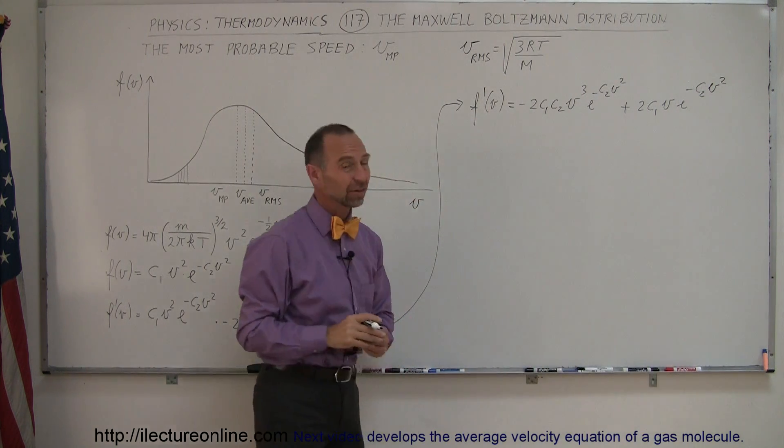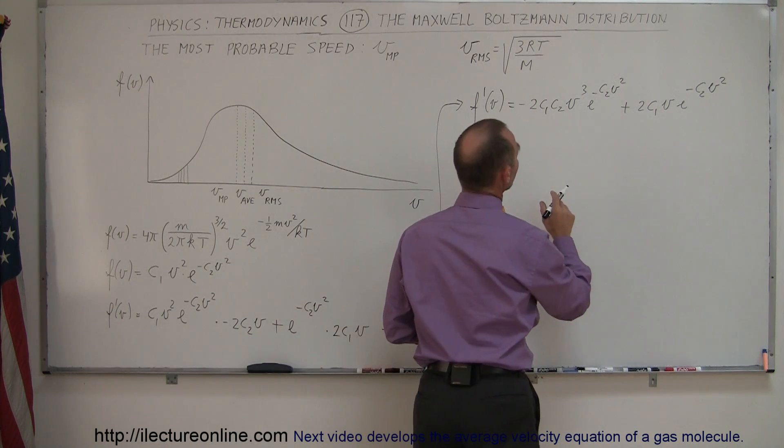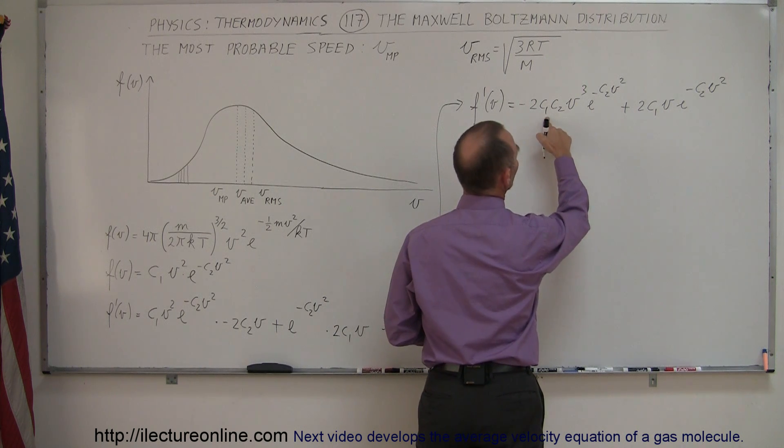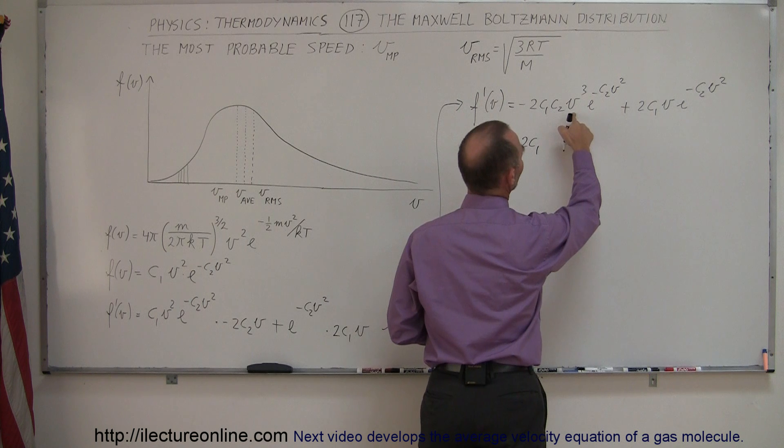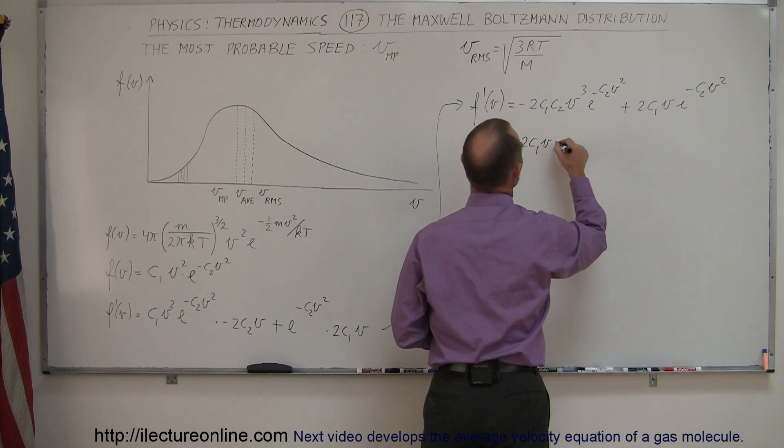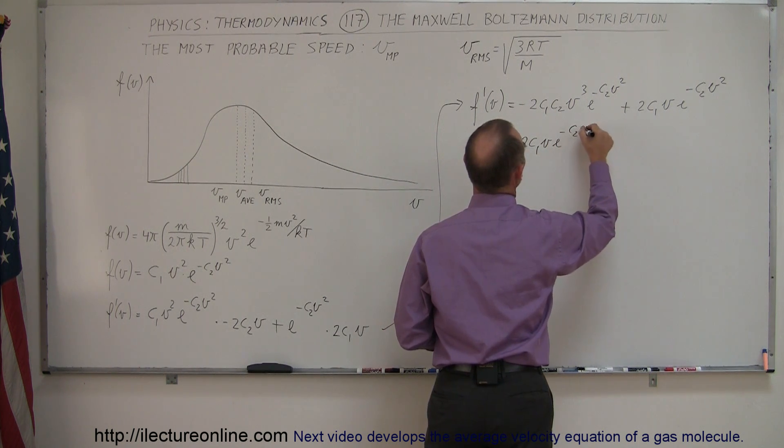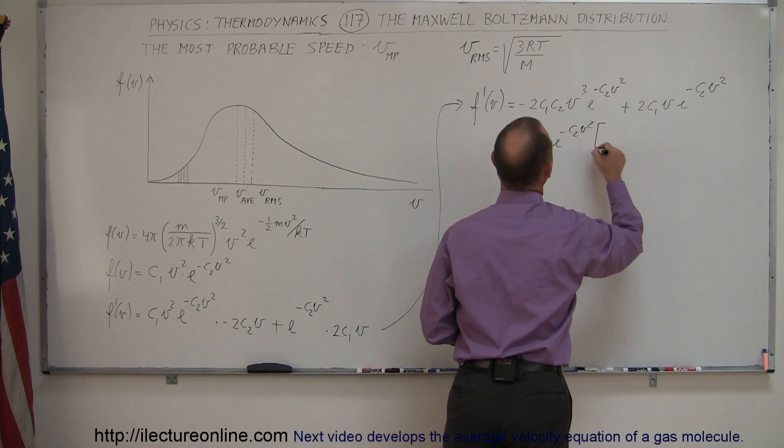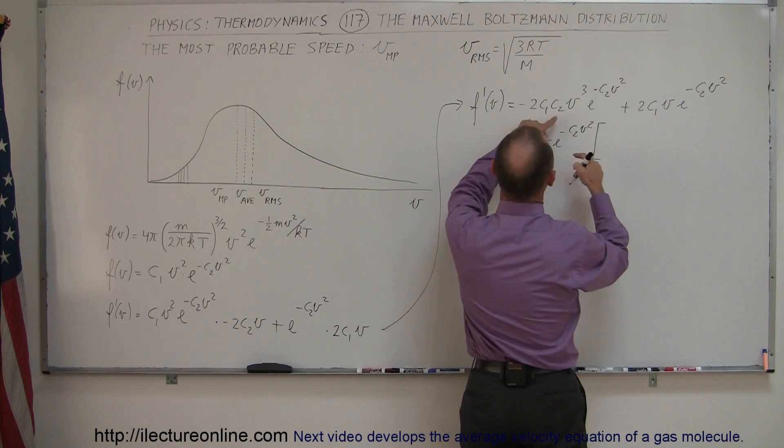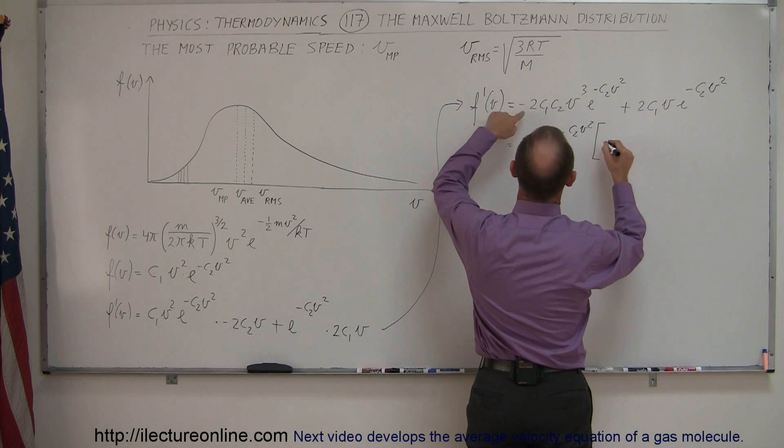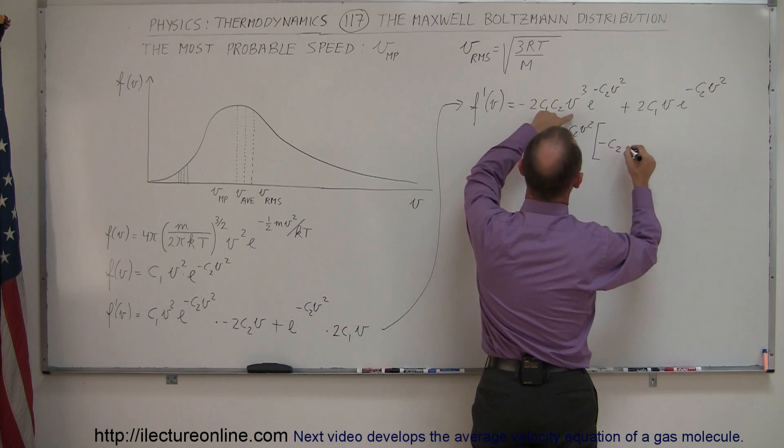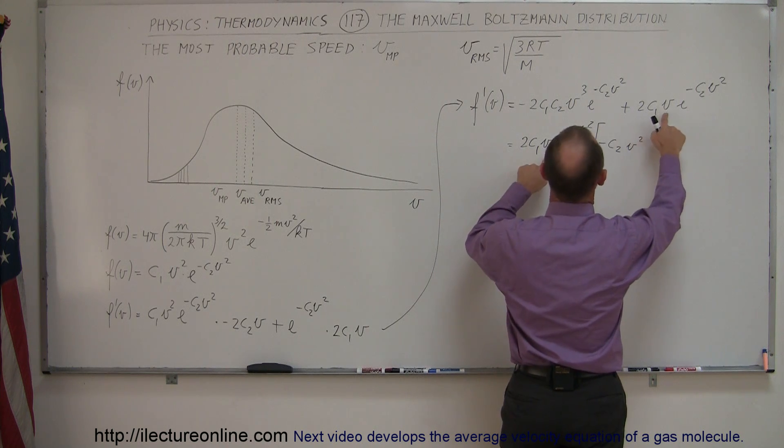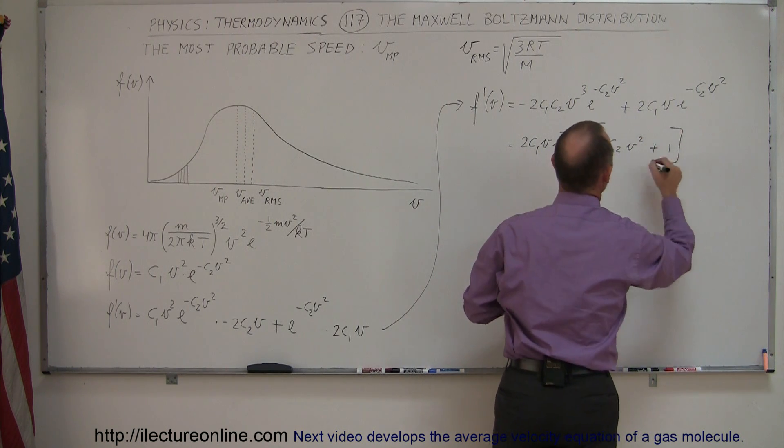Now I think we can see that there's some common factors we can pull out. We can pull out, this is equal to, we could pull out the 2, we could pull out c1, so 2 c1. We have a v and a v there, so times v times e to the minus c2v squared. This minus should be here. There we go. And then what we have left, so here we have, we pulled out, we have a c2, we have a minus, so we have a minus, we have a c2 left, we have a v squared left. And over here we pulled out the 2, the c1, the v and e, so we have just a plus 1 left. There we go. So there's our derivative.